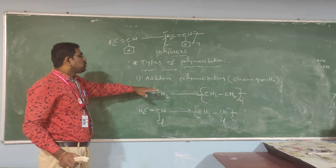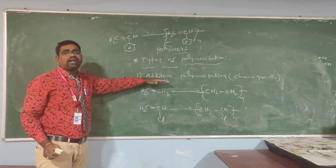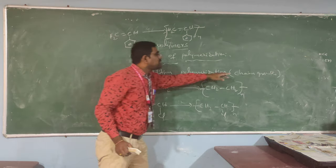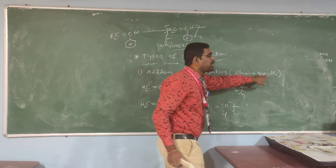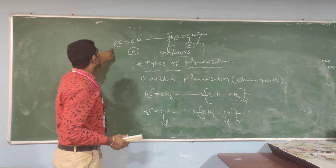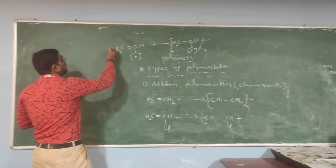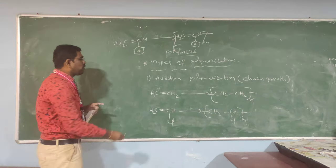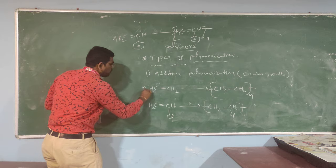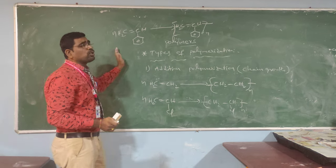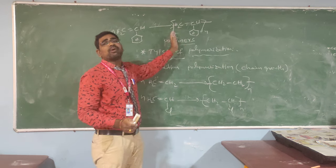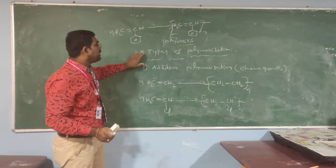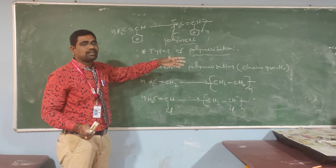These polymers are called addition polymerization, also known as chain growth polymerization. N, the number of monomers, is converted to a number of polymers. This is all for addition polymerization.